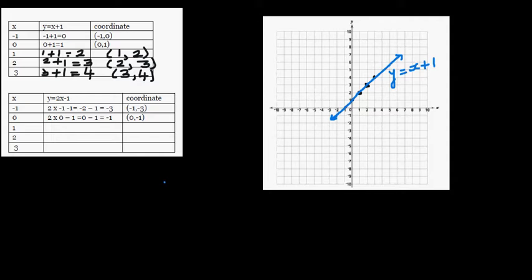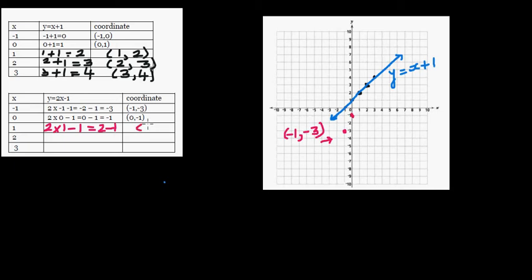To plot the point negative one, negative three: negative one is here and negative three is here, so this point is negative one comma negative three. The next point — put zero into the equation: two times zero is zero, take away one is negative one, so zero comma negative one is this point. If you put one in: two times one take away one equals two minus one which is one, so the coordinate is one comma one.